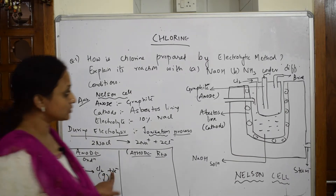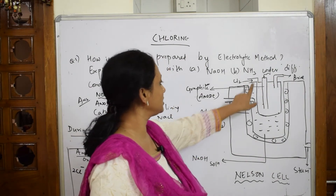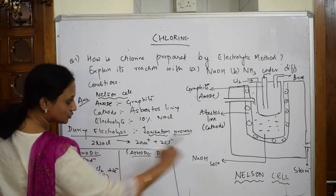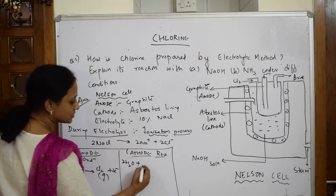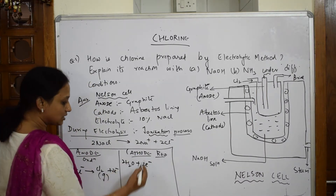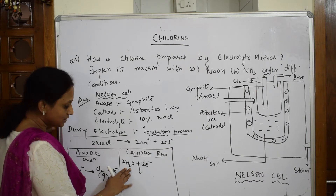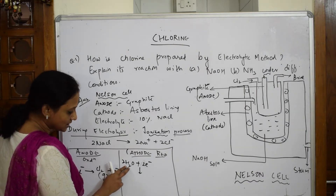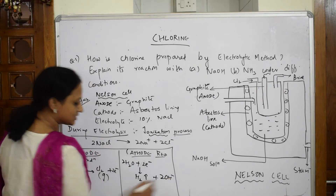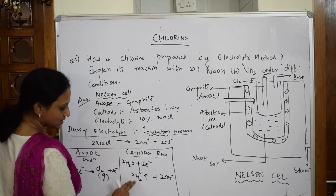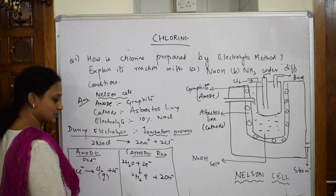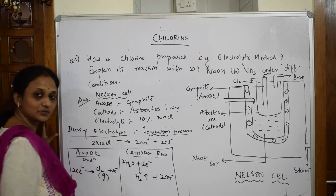These two electrons from the anodic compartment are sent to the cathodic compartment. In the cathodic compartment, steam is also present — this is important and students often don't write it. Two water molecules pick up the two electrons: 2H₂O + 2e⁻ → H₂ + 2OH⁻. The hydrogen comes out as hydrogen gas, and two OH⁻ ions are left over.